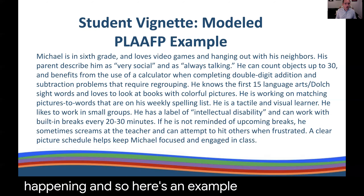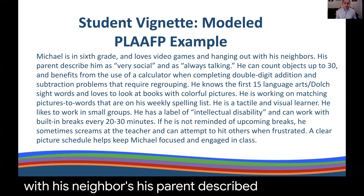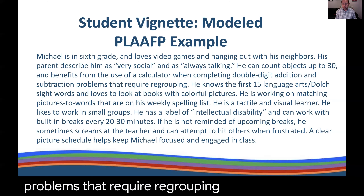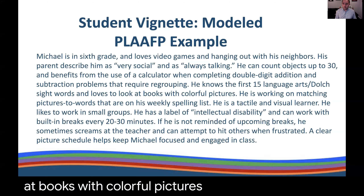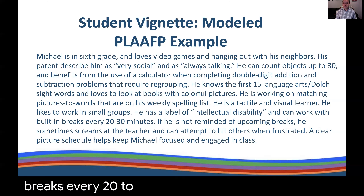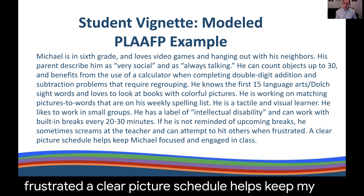Here's an improved example. Michael is in sixth grade and loves video games and hanging out with his neighbors. His parent describes him as very social and always talking. He can count objects up to 30 and benefits from the use of a calculator when completing double-digit addition and subtraction problems that require regrouping. He knows the first 15 language arts Dolch sight words and loves to look at books with colorful pictures. He is working on matching pictures to words on his weekly spelling list. He is a tactile and visual learner who likes to work in small groups. He has a label of intellectual disability and can work with built-in breaks every 20 to 30 minutes. If he is not reminded of upcoming breaks, he sometimes screams at the teacher and can attempt to hit others when frustrated. A clear picture schedule helps keep Michael focused and engaged in class.